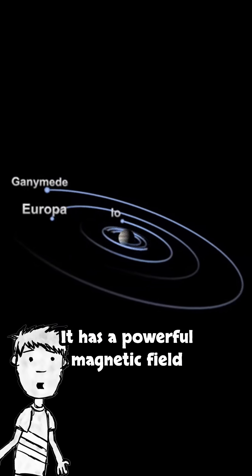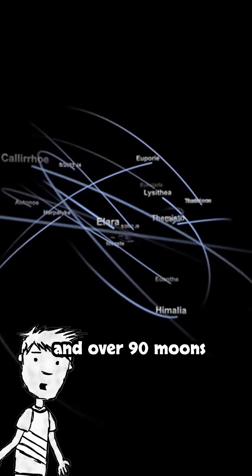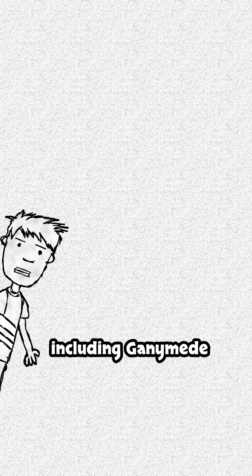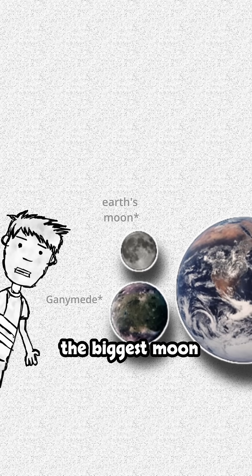It has a powerful magnetic field and over 90 moons, including Ganymede, the biggest moon in the solar system.